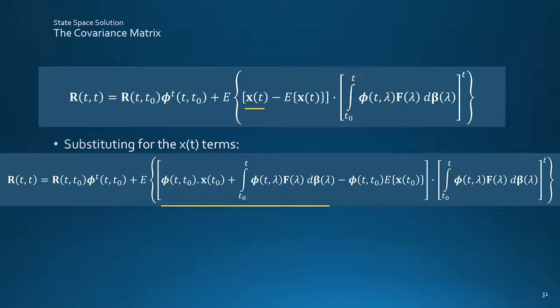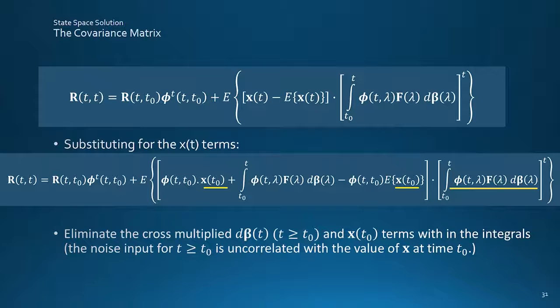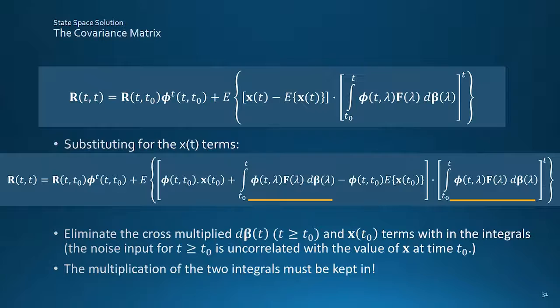Now there's still the XT term here, so the solution for XT can again be plugged in along with the mean. Still a bit of a mess. But as for the previous derivation for RST, we can eliminate the cross-multiplied XT0 terms, and the d-beta integral term, as the noise drive for T greater than T0 is uncorrelated with the value of X at time T0. The tricky bit, however, is that the multiplication of the two integrals must be kept in. So it comes down to this.